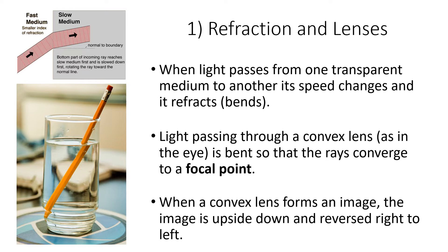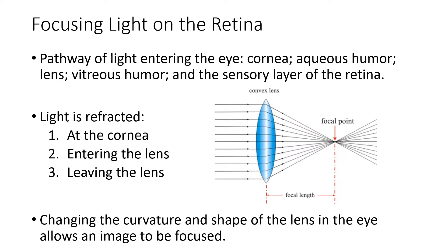A convex lens can be used to form an image, but as you're going to see, the image is going to be upside down and reversed. Light that enters the eye has to pass through several layers: first the cornea (the clear outer protective layer), then the aqueous humor (a watery substance between the cornea and lens), then through the lens itself, then into the posterior chamber filled with vitreous humor — a very viscous, thick gel-like material — and finally through the sensory layer of the retina before striking a photoreceptor.